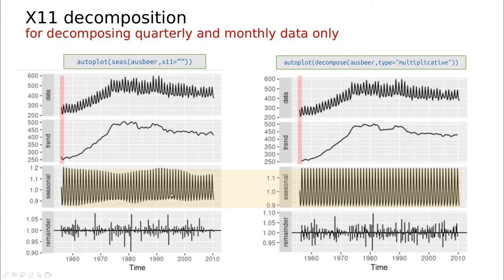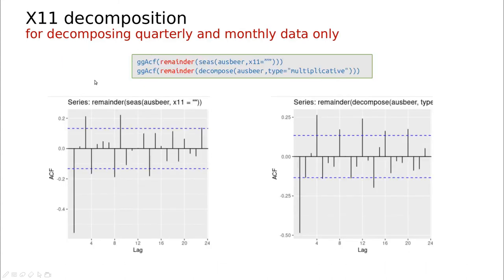We have changed seasonality a little bit, and also you can see that we have recovered this missing part at the ends of the series, because we are not using strictly a moving average, so we can recover that part of the information.